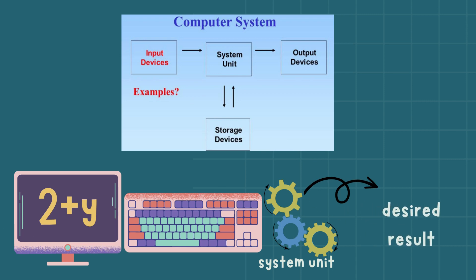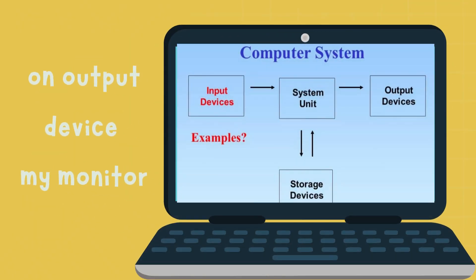That output device is the monitor, that is the screen of my computer. You can see there's a small box which indicates the storage devices. Storage devices is actually the external and primary and secondary memory of the system unit. Thank you so much, I hope you enjoyed it.